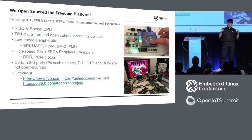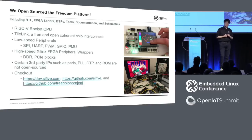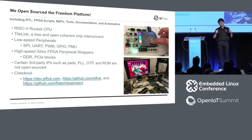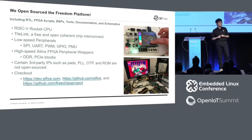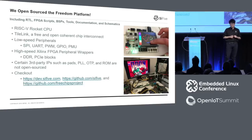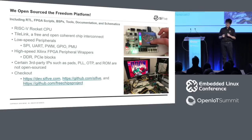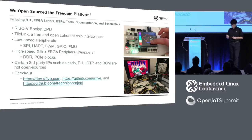For those who can't wait to hack on the hardware, we've also open-sourced the Freedom Platform. That means you can take the RISC-V Rocket CPU, which is open-source, TileLink the coherent chip interconnect, low-speed peripherals, and high-speed Xilinx peripheral wrappers for DDR and PCIe, and map that onto your own FPGA. The Freedom Everywhere platform and Freedom Unleashed platform have both been mapped onto FPGAs — Doom is also working on that. Unfortunately, some third-party IPs must be kept closed-source due to NDA reasons; you can get access to those using the SiFive chip design services. Check out dev.sifive.com or SiFive's GitHub organization or FreeChips' GitHub organization.